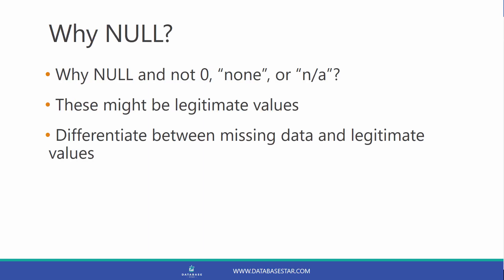So why would you use NULL, and not 0, or NONE, or NA? It's because these values might have specific uses and might be legitimate. If you are using a number field, then 0 might be a valid value. You also want to differentiate between records that have a value entered that might represent 0 or NONE, and records where nothing has been recorded at all.